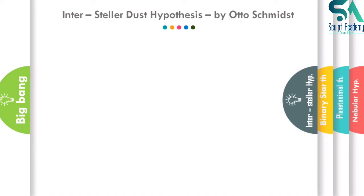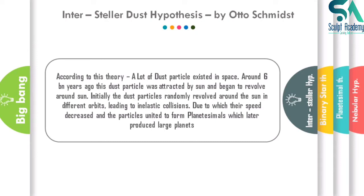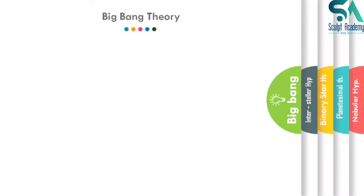Next is the Interstellar Dust Hypothesis. In this hypothesis, a large amount of dust particles existed in space around 6 billion years ago. These dust particles were attracted by the sun and began to revolve around it. Initially the particles randomly revolved in different orbits, leading to inelastic collisions, due to which their speed decreased and the particles united to form small planetesimals. These planetesimals then produced large planets through continued collisions and gravitational accumulation.